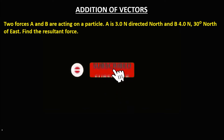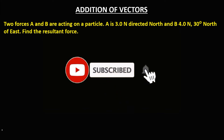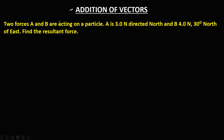Welcome to MathStorya. For the addition of vectors, we have this problem: two forces A and B are acting on a particle. Force A is 3 newtons directed to the north. Force B is 4 newtons, 30 degrees north of east. Find the resultant force.